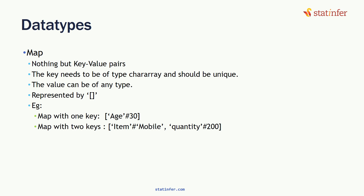Map is represented by square brackets. An example of a map is [age#30], where age is the key and 30 is the value. A map with two keys: [item#mobile, quantity#200], where item and quantity are keys and mobile and 200 are values. Map is simply a key-value pair, and in certain operations these key-value pairs become very useful.